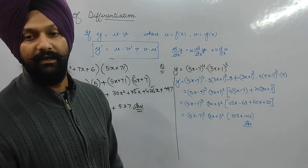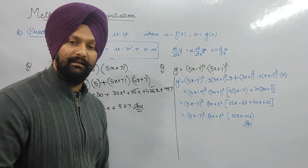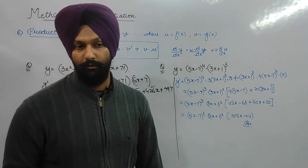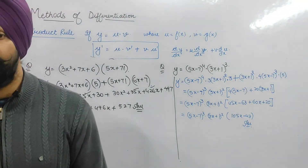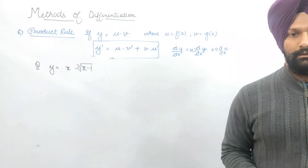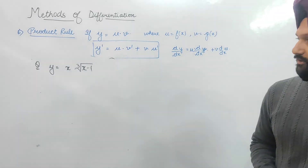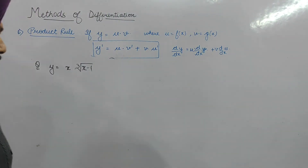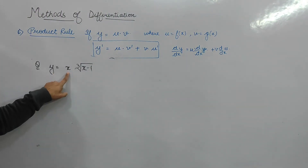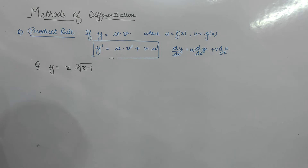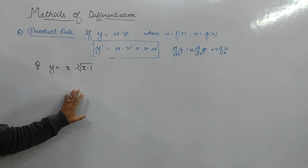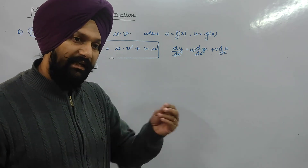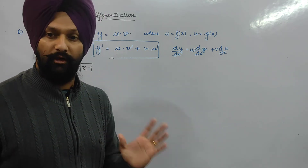There is no need to simplify further — we are just supposed to do the multiplication. Next question is another application of the multiplication rule: y = x · ∛(x − 1).